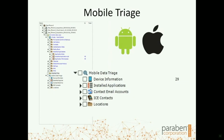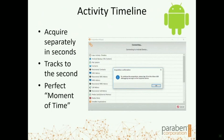It also provides the contact and email accounts associated with the device, so you know what type of external communication might be happening. It gives you ICE information for any emergency situation involving a child, and of course location information. We try to pull it from a variety of sources, and having a collection of your geolocation information can really save you time in your investigation.